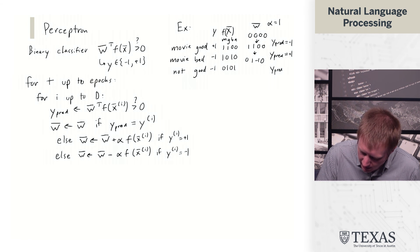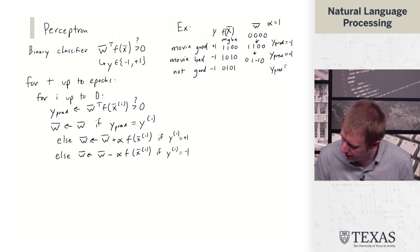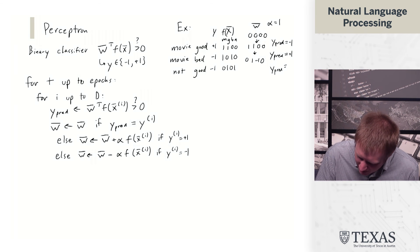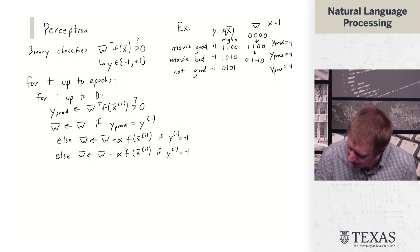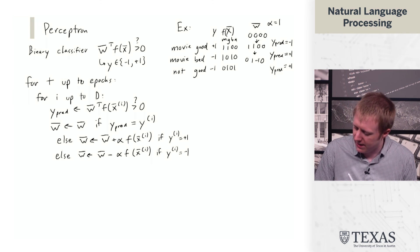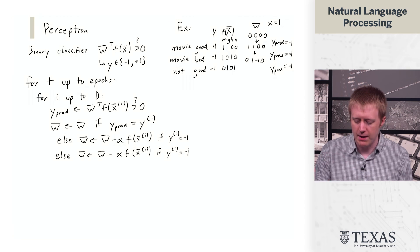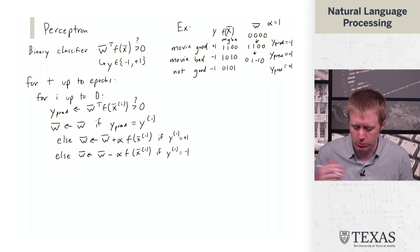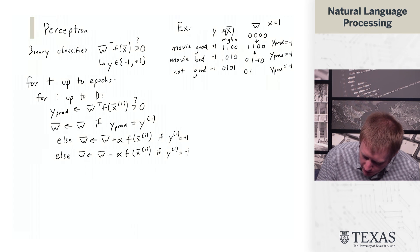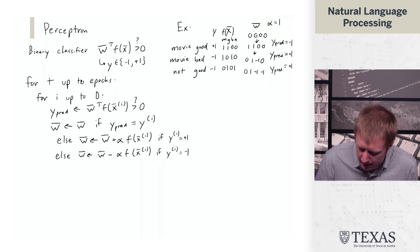For the third example — I'll admit I set this up so it would always be wrong — we again make the wrong prediction and subtract off the features. We end up with weight vector 0, 1, minus 1, minus 1.